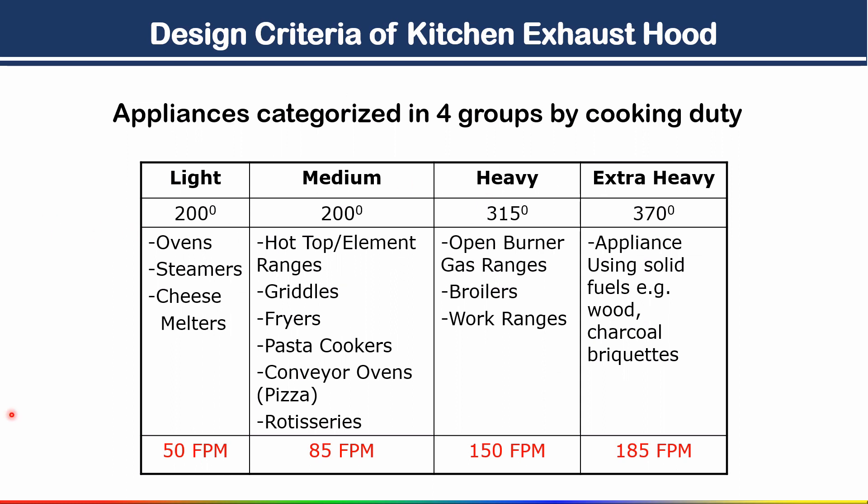Appliances are categorized into 4 groups by cooking duty: light cooking, medium cooking, heavy cooking, and extra heavy cooking. Ovens, cheese melters, and steamers come under light cooking. Fryers and griddles come under medium cooking. A temperature range around 315 degrees corresponds to heavy cooking — generally restaurant cooking is heavy cooking. In residential buildings the kitchen is medium or light cooking only. For commercial buildings, cooking comes under medium cooking. Required face velocity: light cooking 50 fpm, medium 85 fpm, heavy 150 fpm, extra heavy 185 fpm.